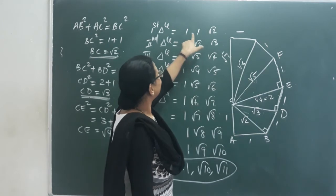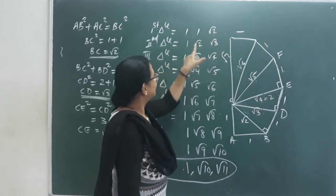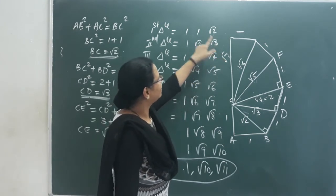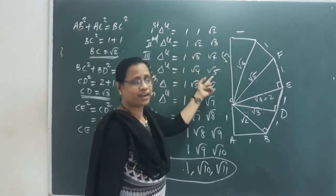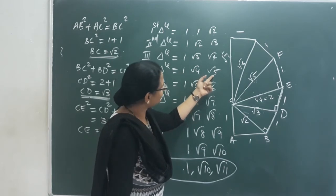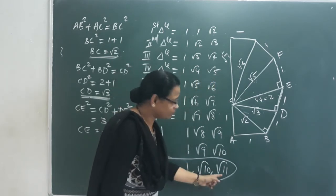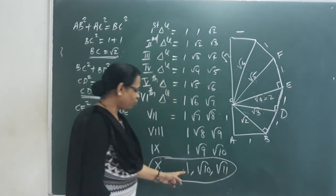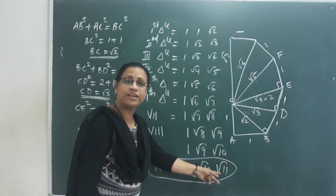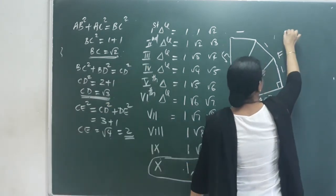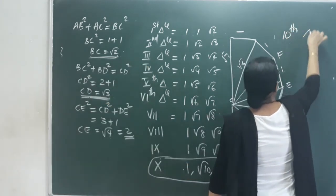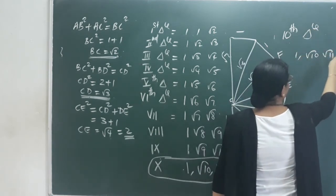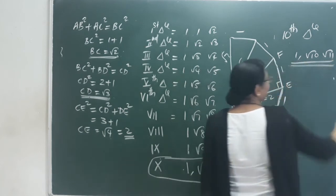Looking at the pattern: the first triangle is 1, √2; the second is 1, √2, √3; the third is 1, √3, √4. So the 10th triangle has sides 1, √10, √11. The sides of the 10th triangle are 1, √10, and √11.